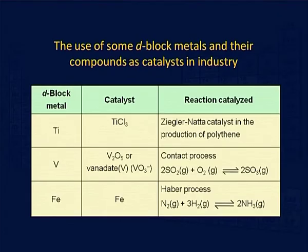The next very important property of the transition metal ion is their use in catalysis. The catalyst is very important — around 90% of industrial processes are incomplete without a catalyst. Transition metal ions and their compounds are very important as catalysts, acting as catalysts in both industrial processes and biological systems.